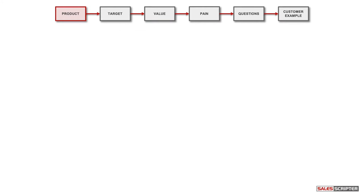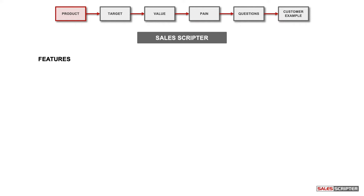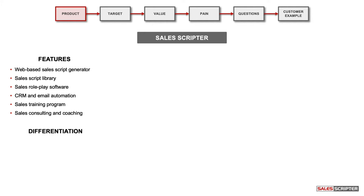The first step in the process is to brainstorm and organize the key details about your product. I'm going to use a demonstration product — the product I sell, which is called SalesScripter. As you're brainstorming the details of what you sell, I recommend you make a list of the features included in your product or service — what does the customer get when they buy? After that, think about how these features or your product are different from the competition.